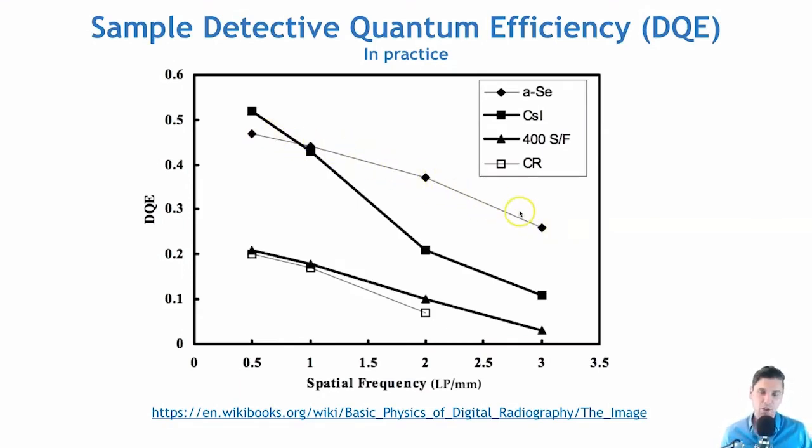This is a sample case of why we would want to use detective quantum efficiency in practice — it provides a meaningful comparison of how efficiently different detector systems capture the inherent information in x-ray imaging.